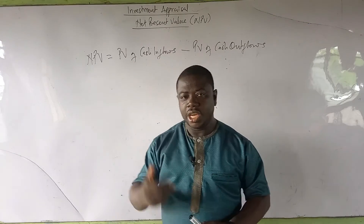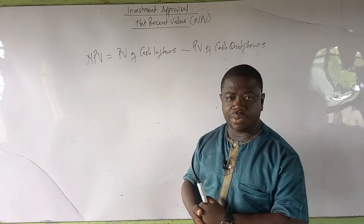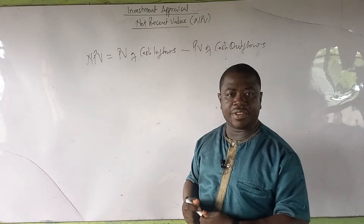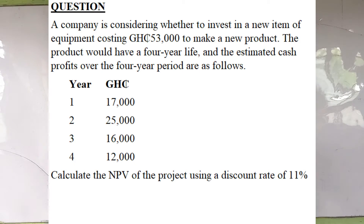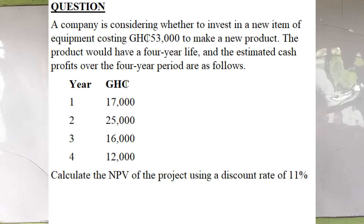I'm going to teach you with a tabular approach and solve a question to illustrate the idea of net present value. A company is considering whether to invest in a new item of equipment costing 53,000 Ghana cedis to make a new product. The product would have a four-year life and the estimated cash profits over the four-year period are: year one — 17,000 Ghana cedis; year two — 25,000 Ghana cedis; year three — 16,000 Ghana cedis; and year four — 12,000 Ghana cedis. Calculate the NPV of the project using a discount rate of 11%.